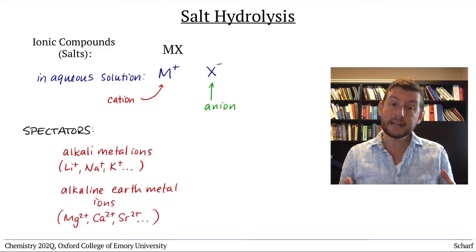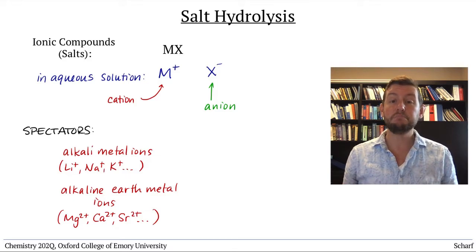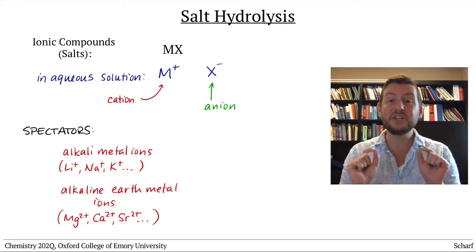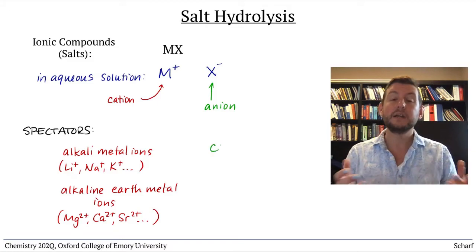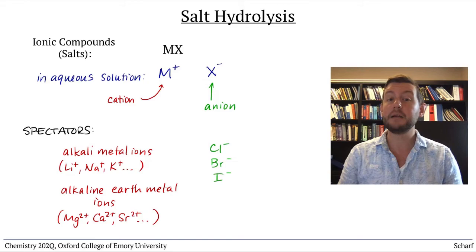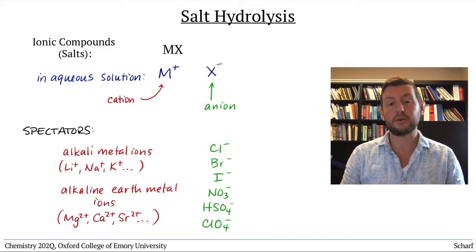The anions that don't impact the pH of a solution are the conjugate bases of the very strong acids, so Cl minus, Br minus, I minus, NO3 minus, HSO4 minus, and ClO4 minus.